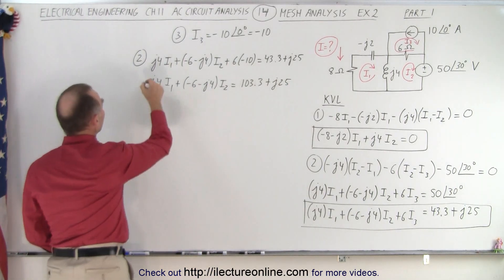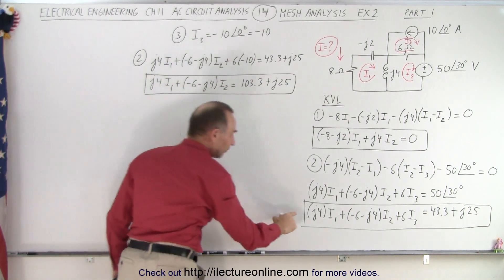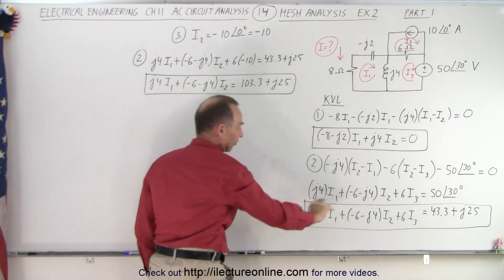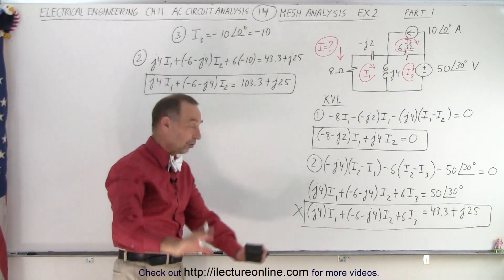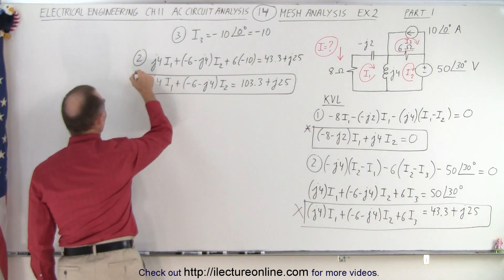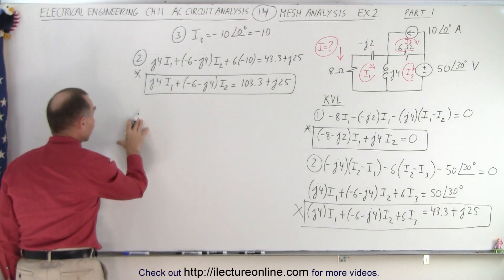Okay, so now what we have here is we have this equation for mesh 2 instead of this equation, because this equation contains I3. So we'll get rid of that. Well, we don't get rid of it, we just don't consider it. So we're going to consider this equation right here and this equation. We now have two equations and two unknowns, which we can put in a matrix format like this.